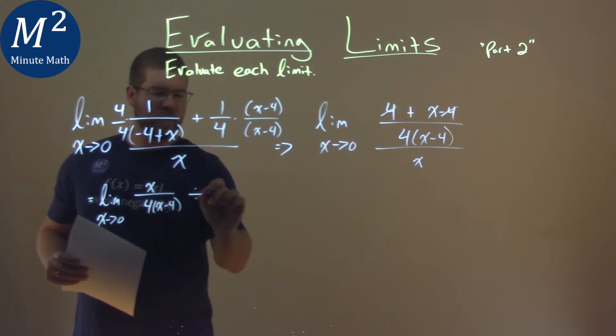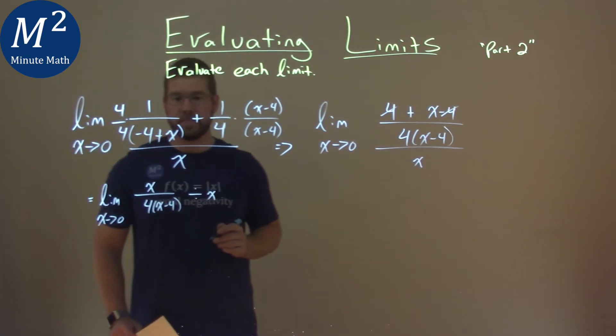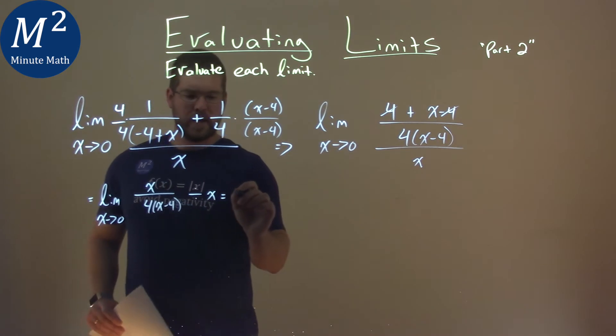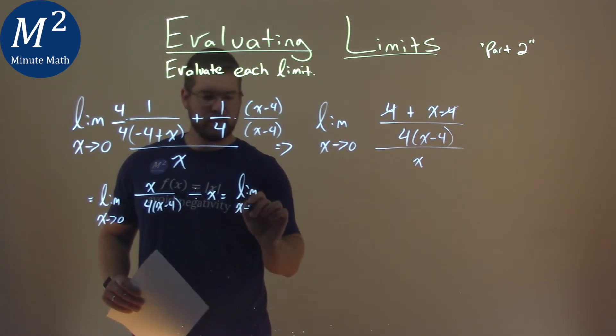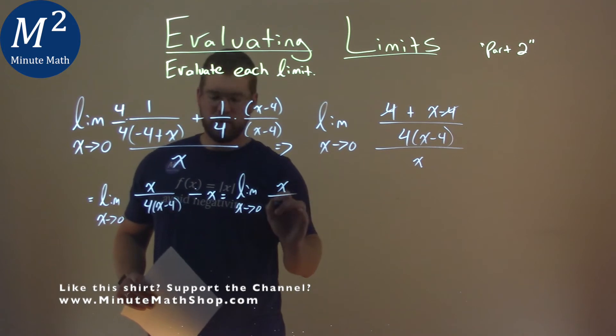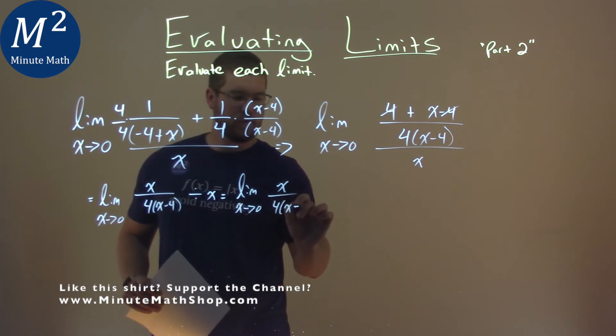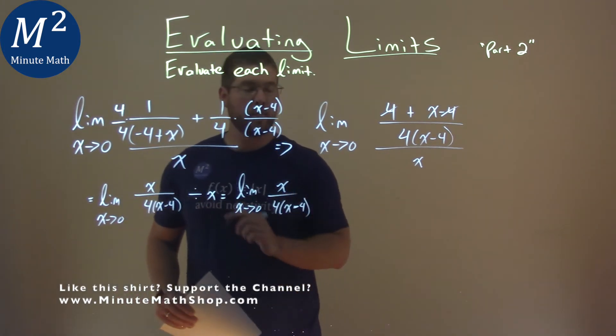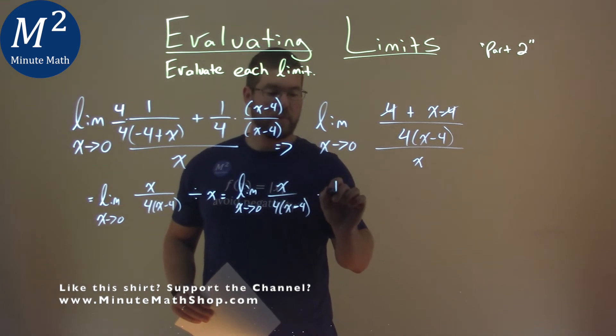And I'm going to write that like this. Divided by x makes it a little easier to see. Well, we keep taking that limit as x approaches 0 of x over 4 times x minus 4. And instead of dividing by x, let's multiply by 1 over x.